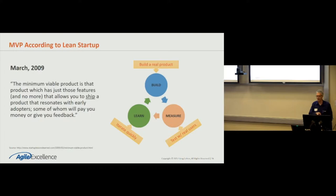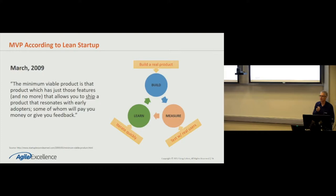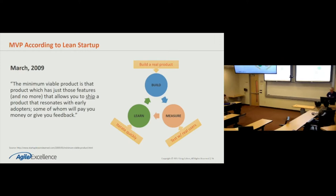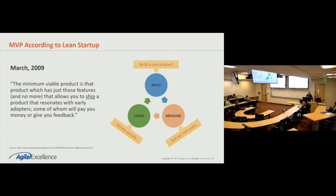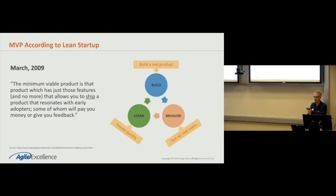The point in history I want to focus on is 2009. In March of 2009, Ries describes the minimum viable product as: 'the product which has just those features and no more that allows you to ship a product that resonates with early adopters, some of whom will pay you money or give you feedback.' The key thing to understand: you are building a real product in this definition. You're going to test it with real users on the behavioral side, and then iterate quickly.